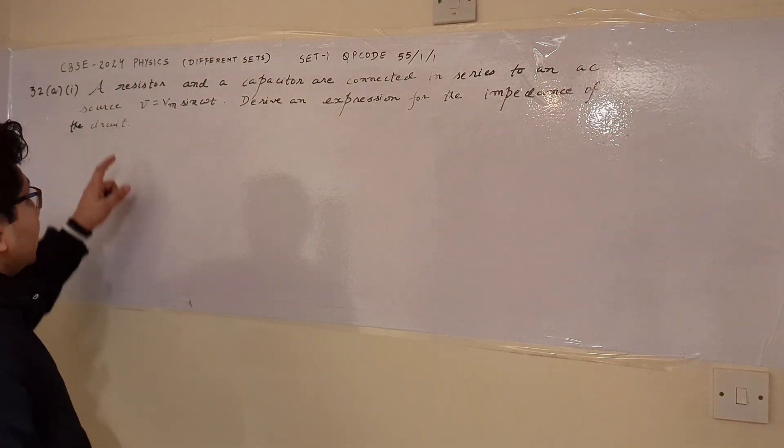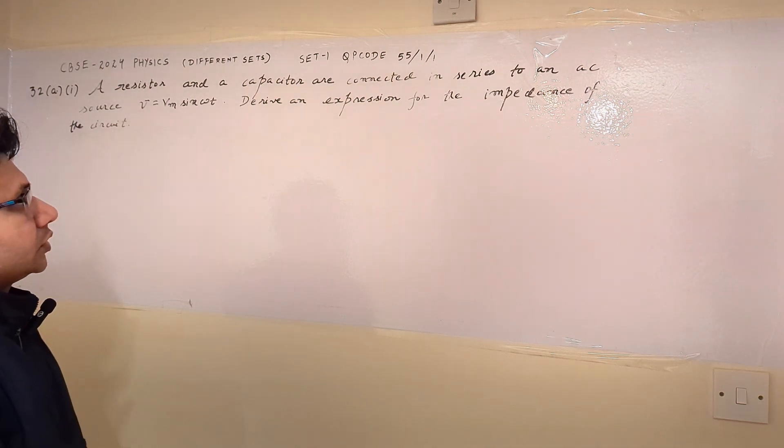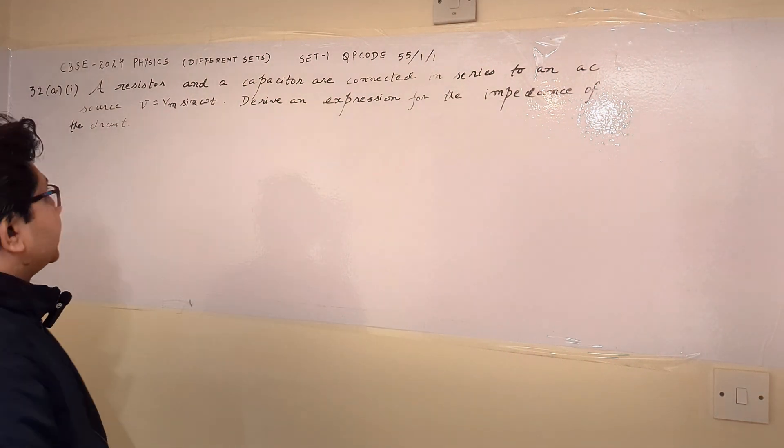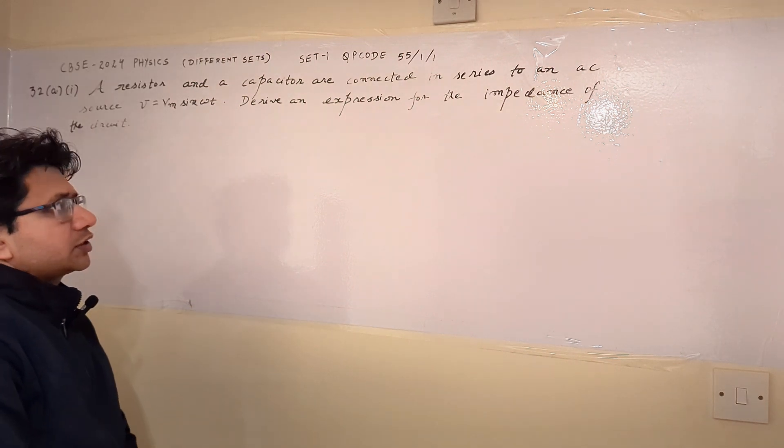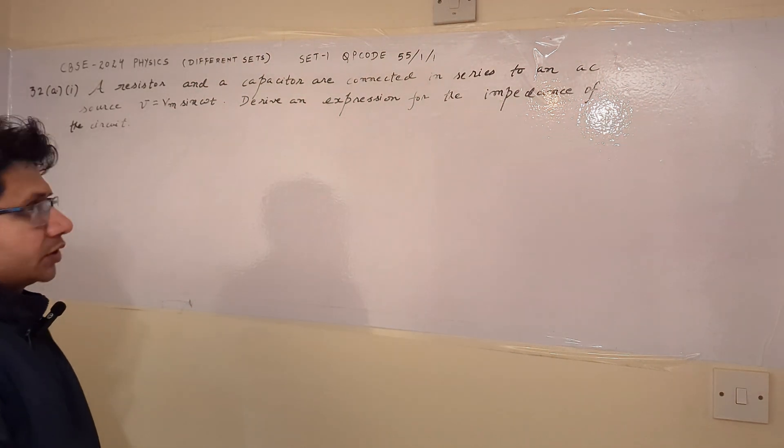Now the question is, a resistor and a capacitor are connected in series to an AC source of V equals to Vm sin omega t, derive an expression for the impedance of the circuit.